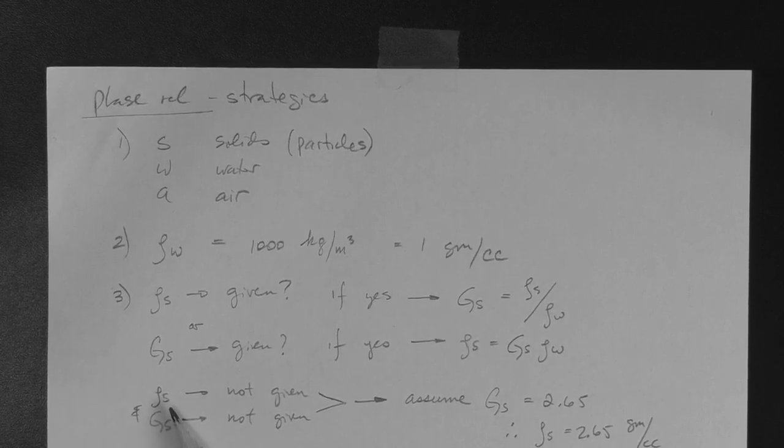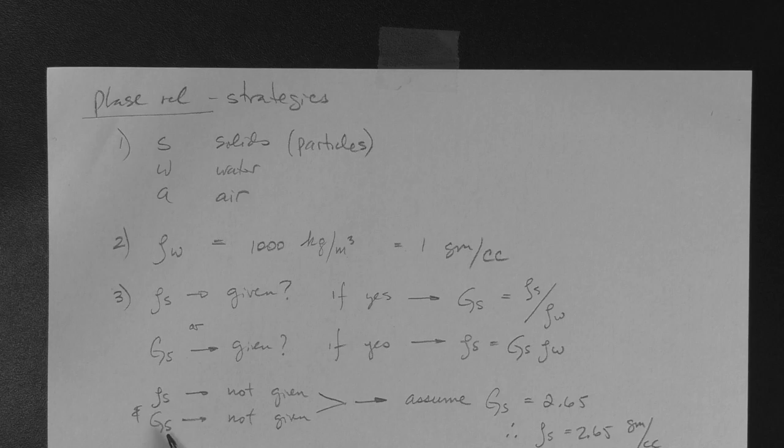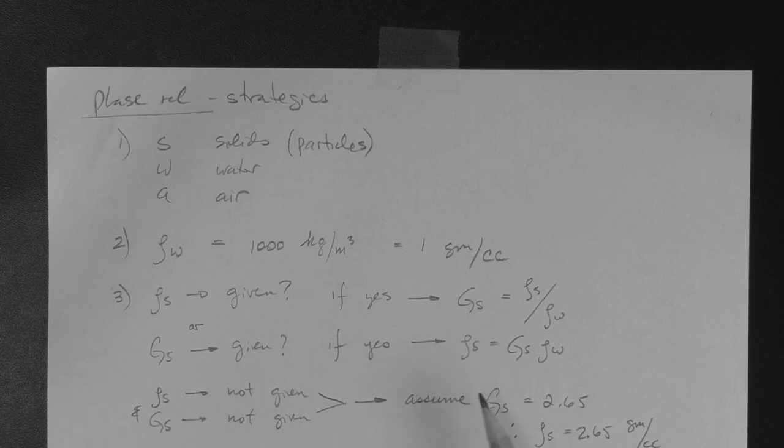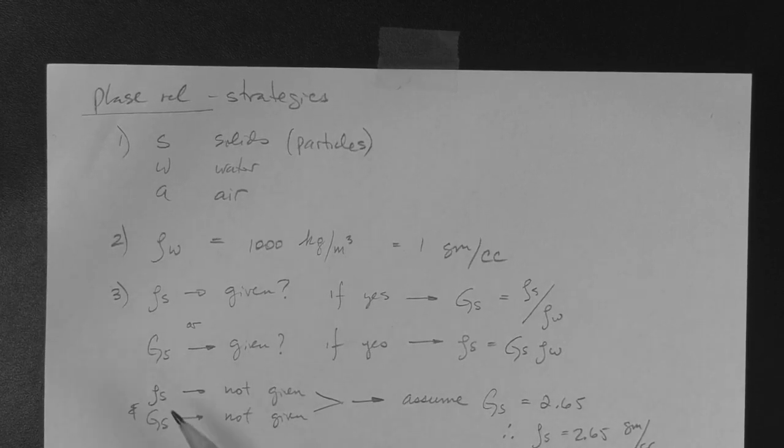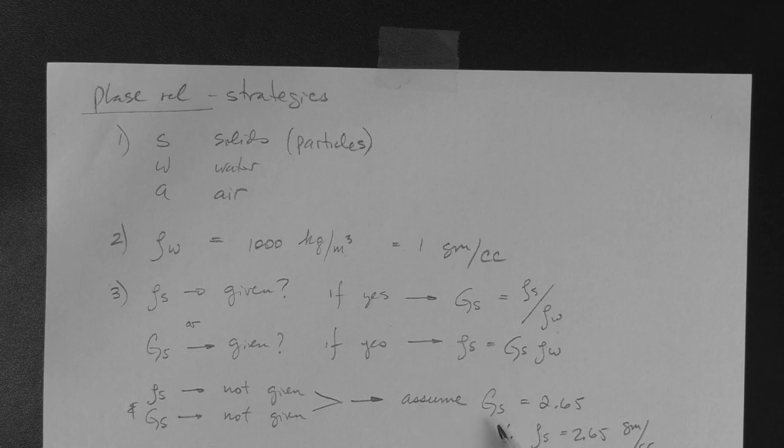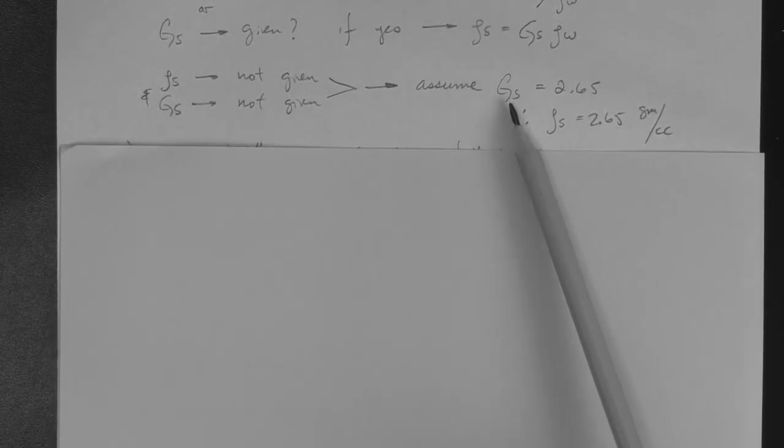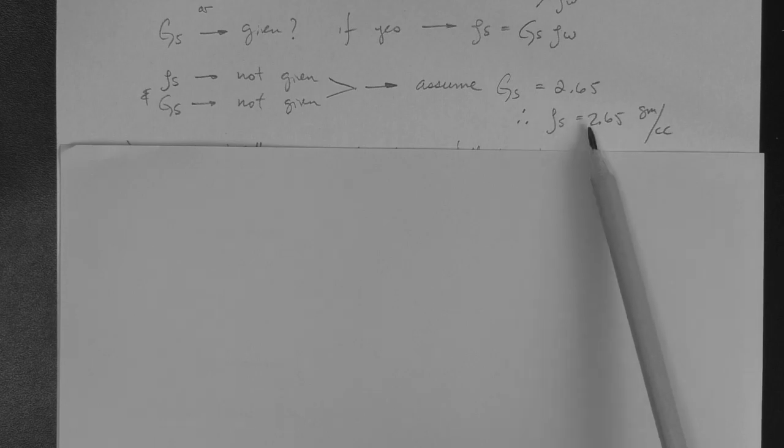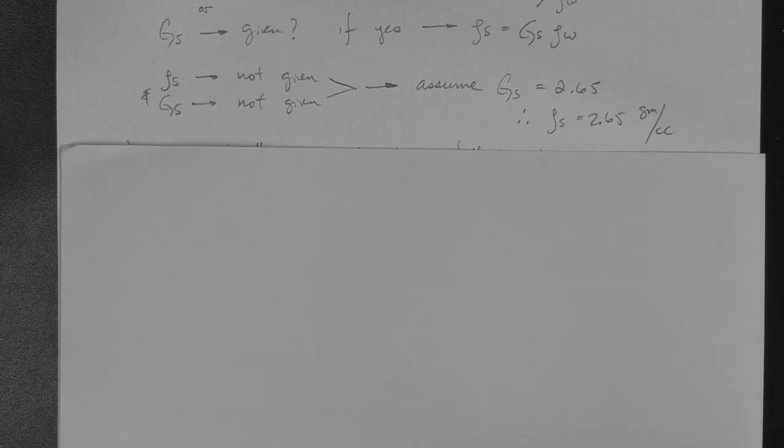Now, what happens if you are not given the mass density of solids and you are not given the specific gravity of solids? So if you are not given any of these, then it is appropriate for calculations to assume the value. The best is actually to measure it in the lab, but if you are essentially calculating without knowledge of a measured value of rho s or a measured value of gs, which is essentially the same, then you can assume gs for the purpose of calculating what you need to calculate for the problem. And you can assume the value that is the most common value, which is 2.65. This means, therefore, that if you assume a value of 2.65, then that translates to a mass density of solids of 2.65 grams per cc.